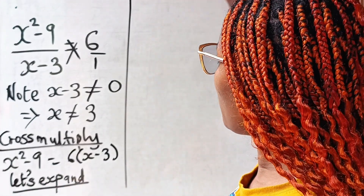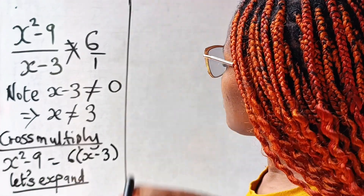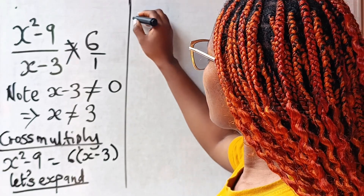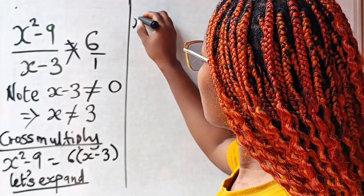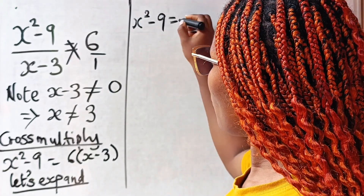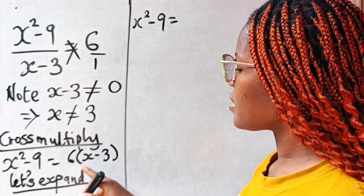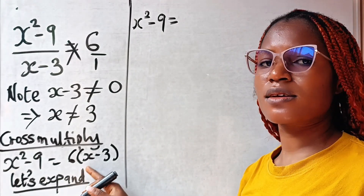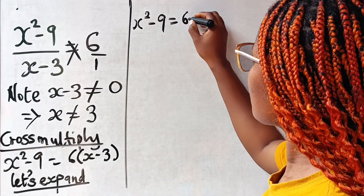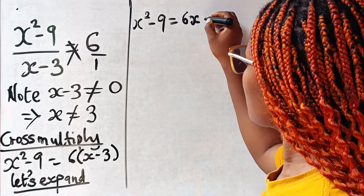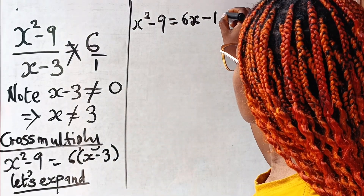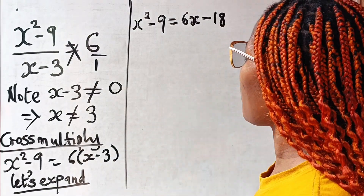Expanding, we have x squared minus nine is equal to six times x, which gives us 6x, minus six times three, which gives us 18.